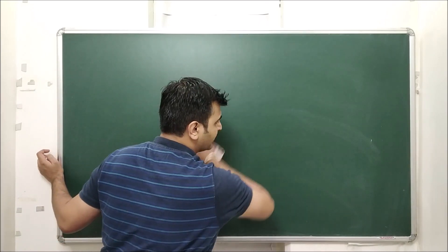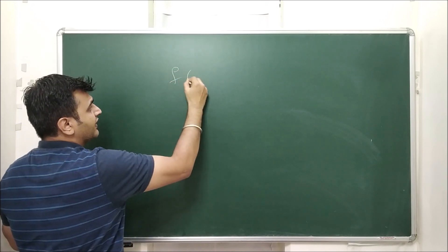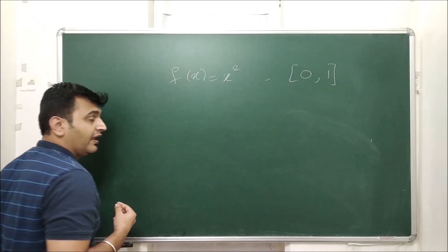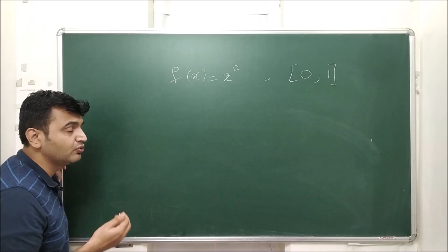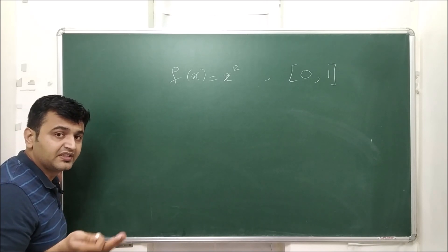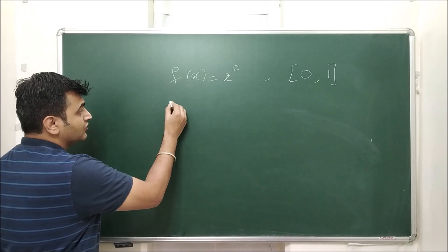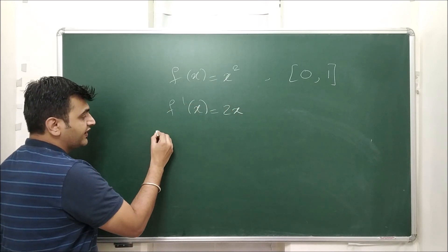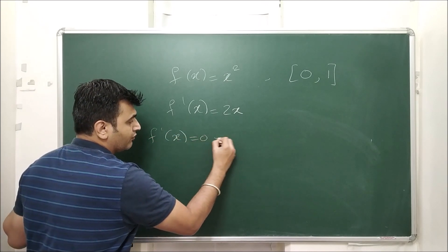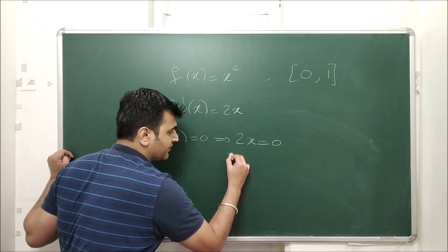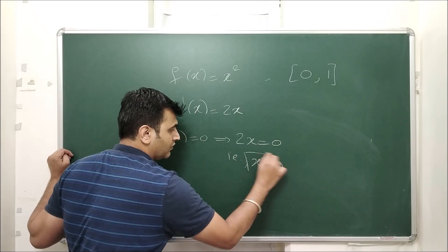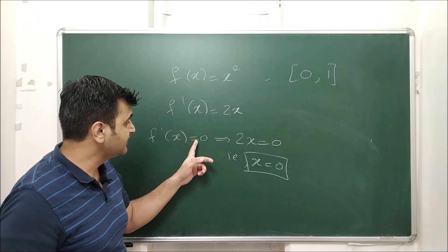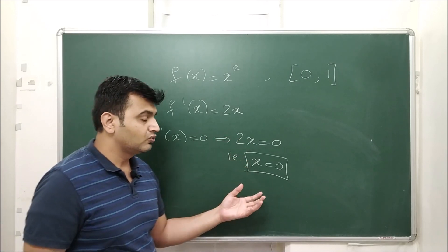Take the basic example: f(x) = x² on the interval [0, 1]. To find critical points, we find the derivative and check where it is zero or undefined. The derivative is 2x. The derivative is zero when 2x = 0, that is, at x = 0. The derivative is defined everywhere, so we only check where it is zero — at x = 0.